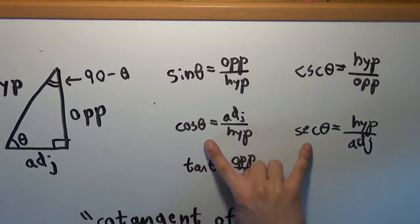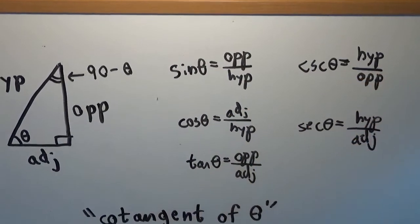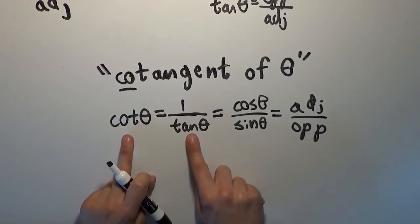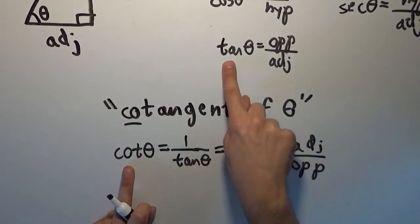And these are reciprocals, but these are co-functions. In the case of tangent and cotangent, they are both reciprocals of each other and co-functions.